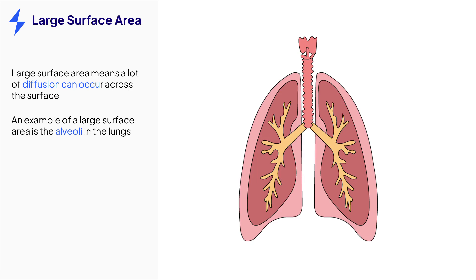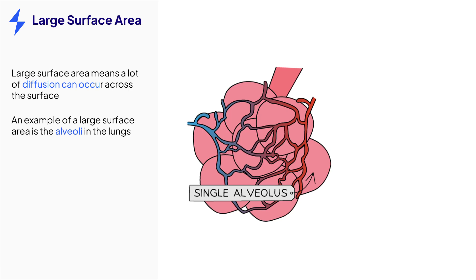If we spread and flattened out all the alveoli in your lungs, they would cover the surface of half a tennis court, a huge surface area that manages to fit into your lungs inside your chest, a small volume.